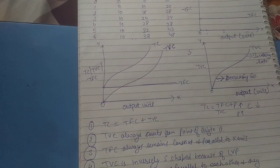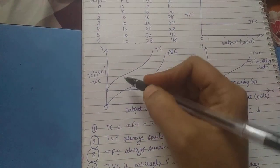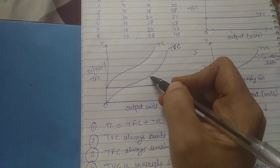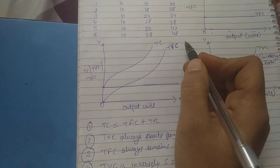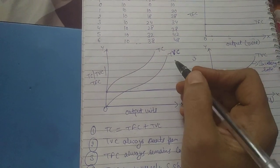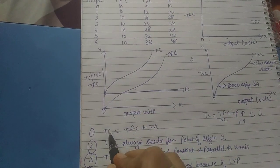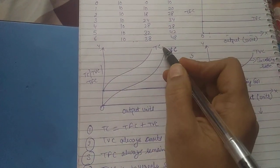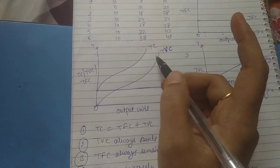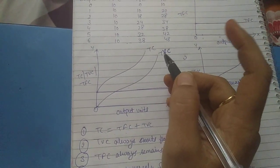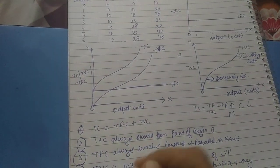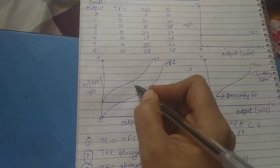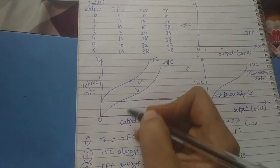The next point — the fifth point — is that TC and TVC are always parallel. As you can see in the diagram, both are parallel to each other and they never meet at any point. Why? Because of the fixed cost — total cost includes TFC plus TVC, that is why both are parallel and will never intersect. The difference between TC and TVC is fixed cost.